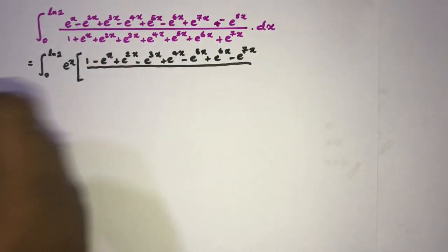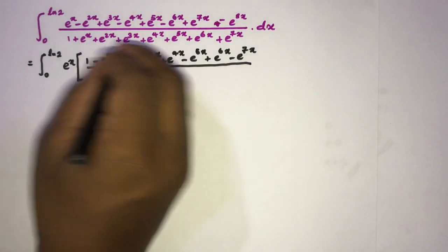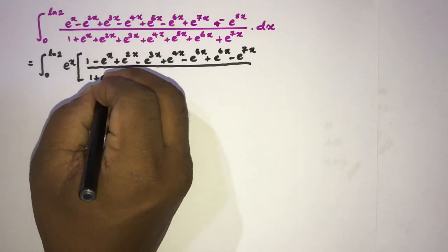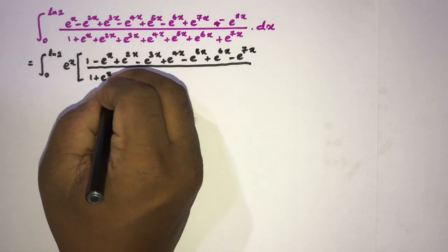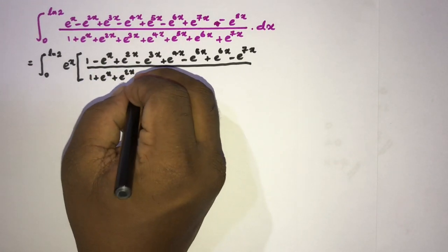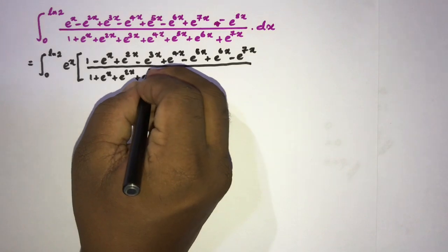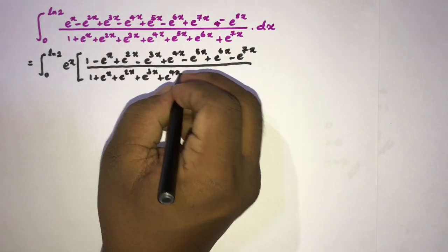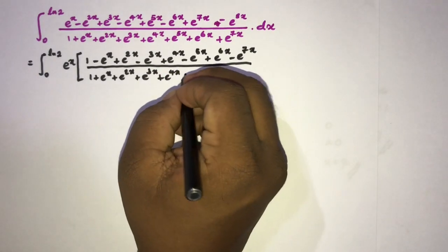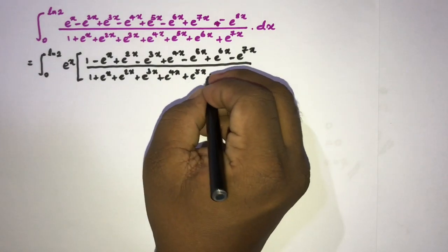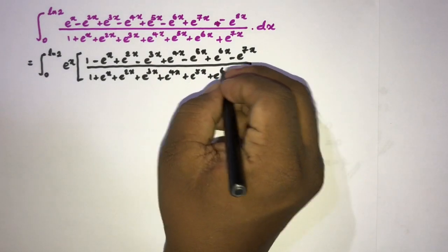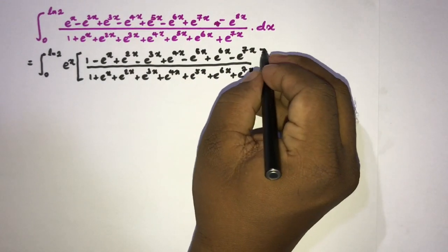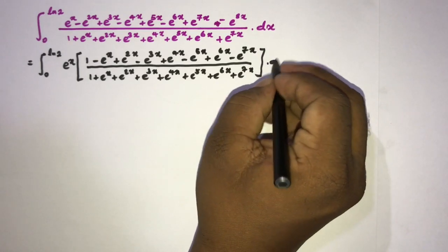In the denominator we have the same expression: 1 plus e to the x plus e to the 2x plus e to the 3x plus e to the 4x plus e to the 5x plus e to the 6x plus e to the 7x, times dx.